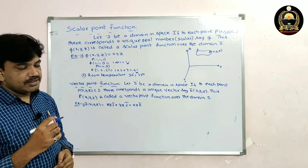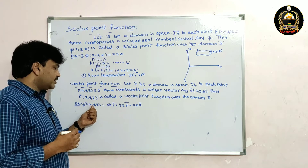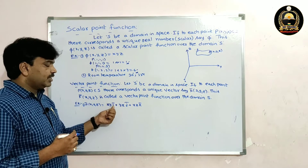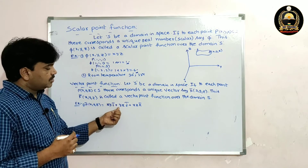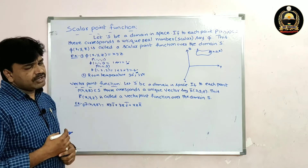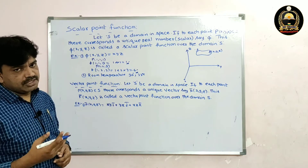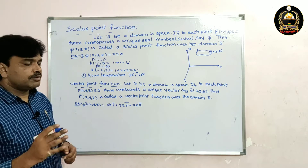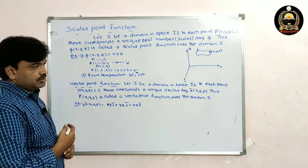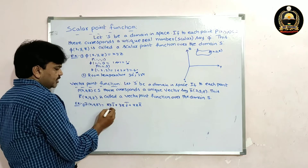For example, F̄(x, y, z) = xy î + yz ĵ + xz k̂. Or we can also take x î + y ĵ + z k̂. This is a vector point function.